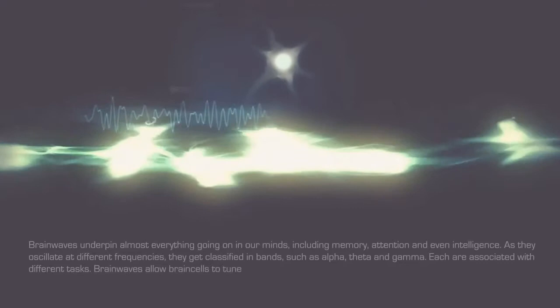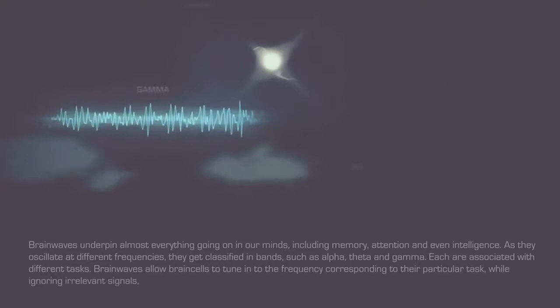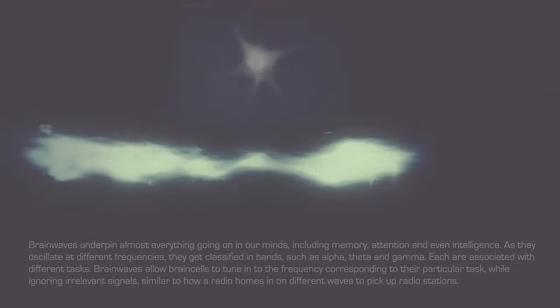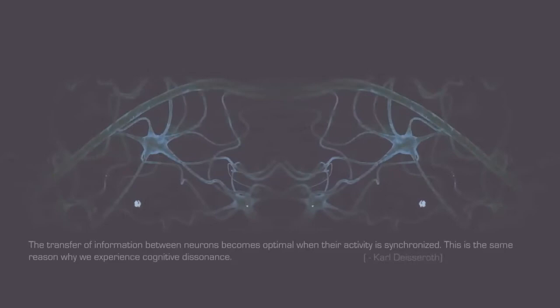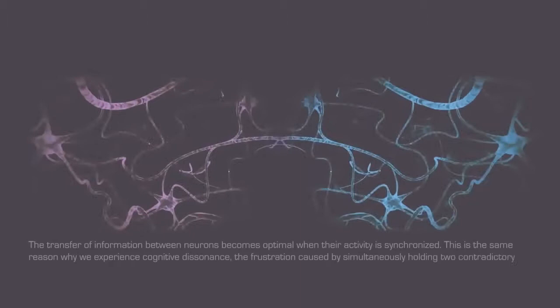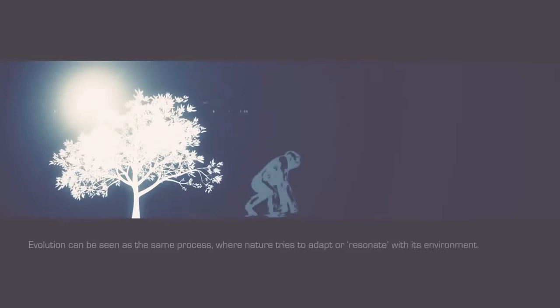Brain waves allow brain cells to tune into the frequency corresponding to their particular task while ignoring irrelevant signals, similar to how a radio homes in on different waves to pick up radio stations. The transfer of information between neurons becomes optimal when their activity is synchronized. This is the same reason why we experience cognitive dissonance, the frustration caused by simultaneously holding two contradictory ideas. Will is merely the drive to reduce dissonance between each of our active neural circuits.